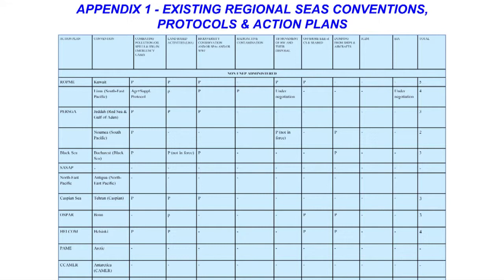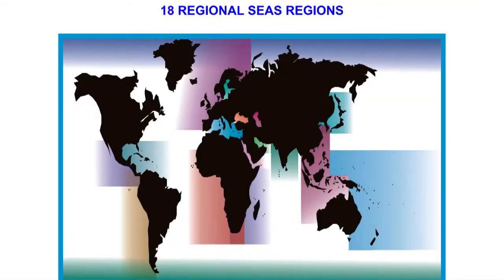The 13 key regions include the Black Sea, the wider Caribbean, the East Asian Seas, Eastern Africa, the South Asian Seas, the ROPME Sea area — which includes the coasts of Kuwait, Iran, Iraq, Bahrain, Oman, Qatar, Saudi Arabia, and United Arab Emirates — the Mediterranean, the Northeast Pacific, the Northwest Pacific, the Red Sea and Gulf of Aden, the Southeast Pacific, and Pacific and Western Africa. The map shows the 18 regional seas regions depicted by different colors.